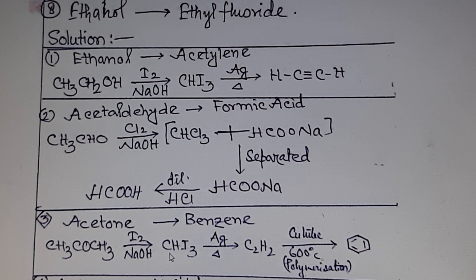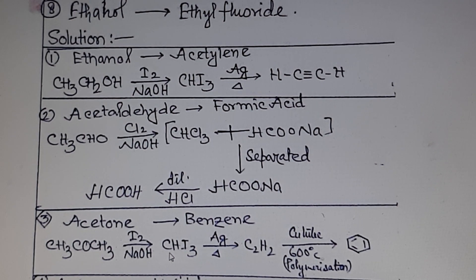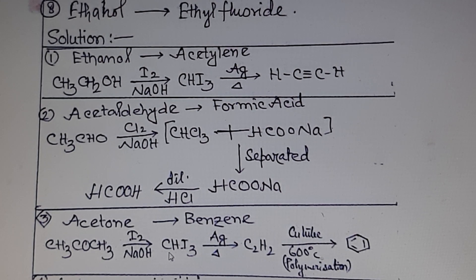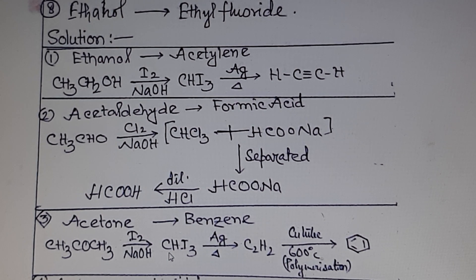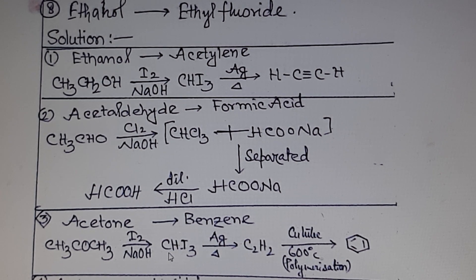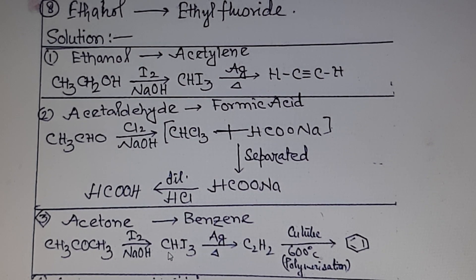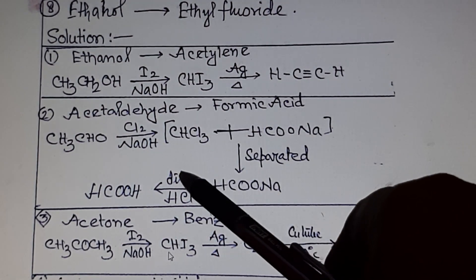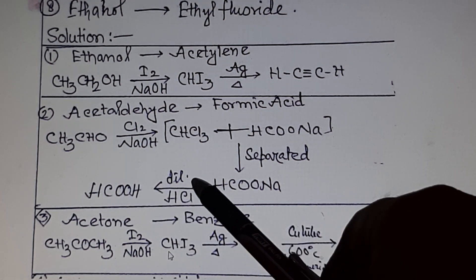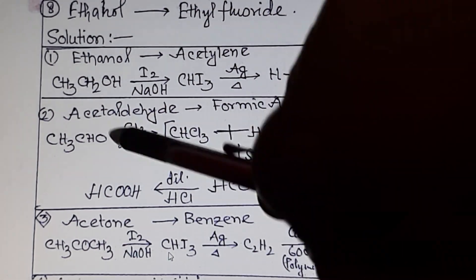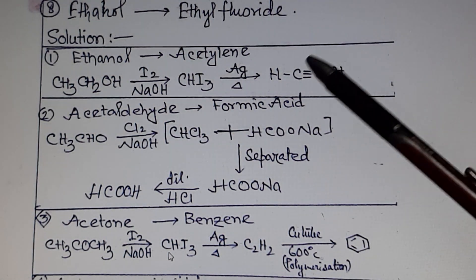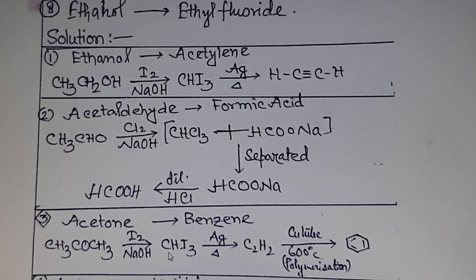Problem 2: acetaldehyde to formic acid without using any oxidizing agent. Acetaldehyde reacts with chlorine in the presence of NaOH to form chloroform, and it also produces sodium formate as a by-product. You separate the sodium formate from the mixture, then acidify it with dilute H₂SO₄ or dilute HCl to form formic acid.